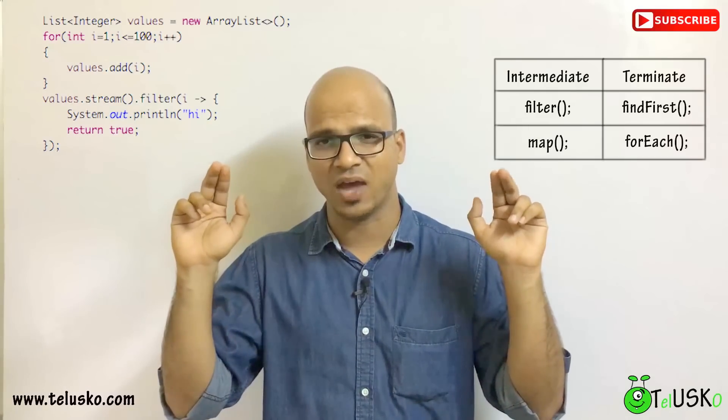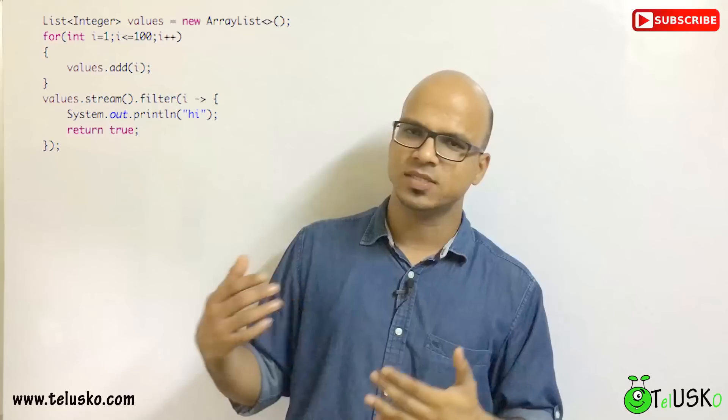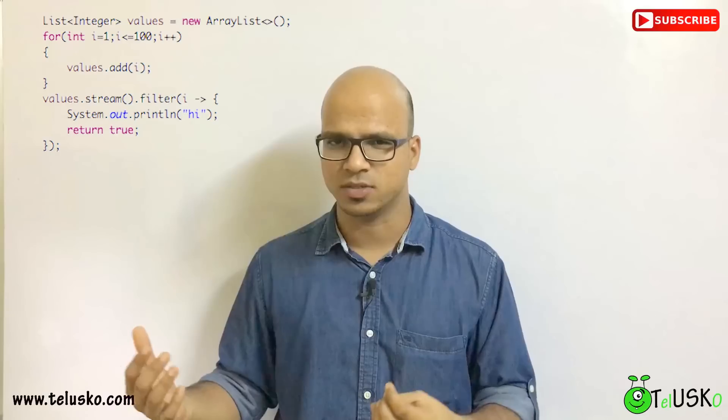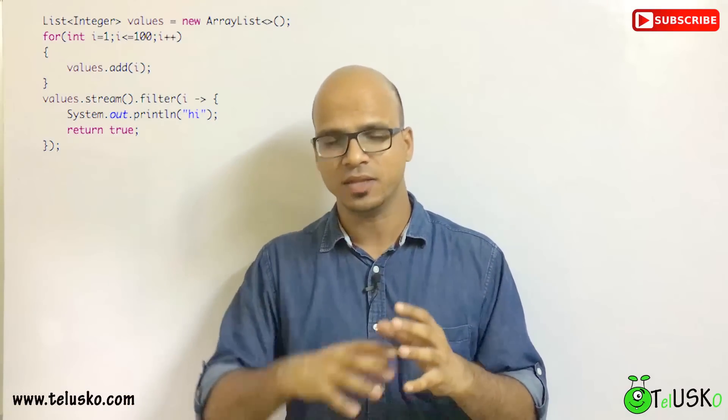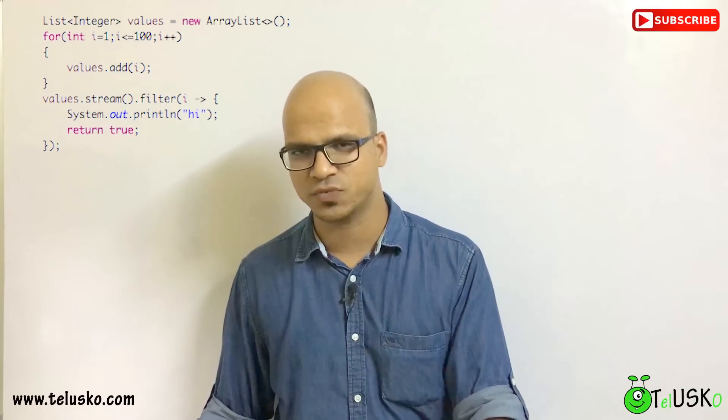Stream has another advantage: it has two types of methods — intermediate methods and terminal methods. If you have a stream of values and apply a filter with a lambda expression passing a predicate, and you print 'hi' inside it, you might expect it to print 100 times. But this code will not execute — no compile-time error, it will run, but no output. This is because filter is an intermediate method, and this behavior is called lazy evaluation.